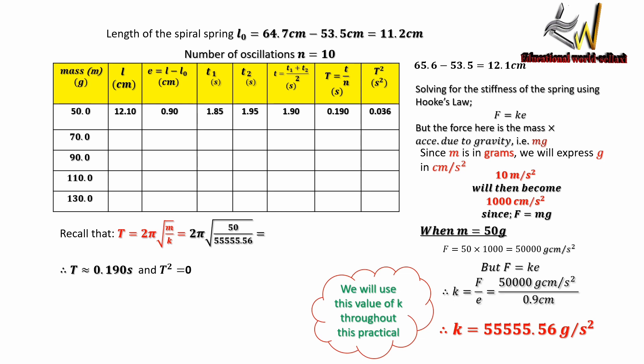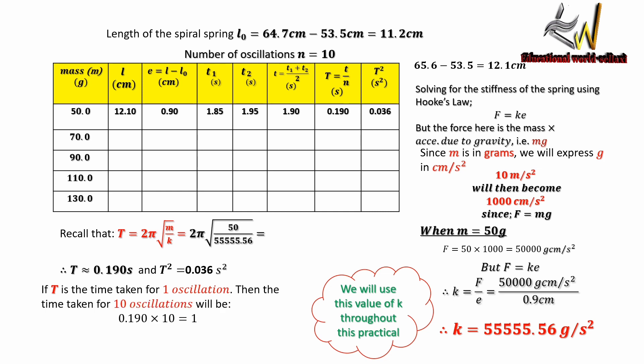Looking at the period of a spiral spring and substituting the variables where necessary, the period T is approximately 0.19 seconds, and the square of the period T² is 0.036 seconds². If T is the time for one oscillation, then the time for 10 oscillations is 0.19 × 10 = 1.90 seconds. We input this into our table of values. For T1 and T2, I simply pick two random numbers whose average gives 1.9 seconds.